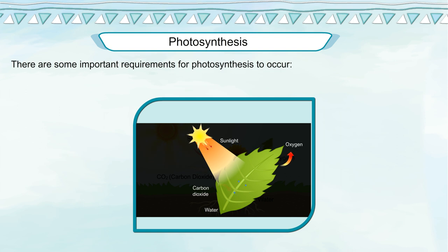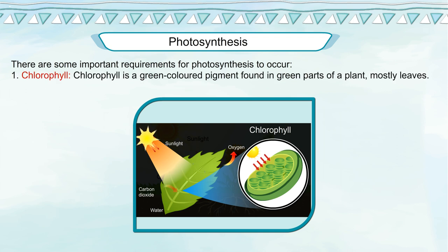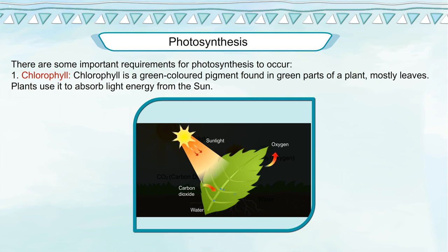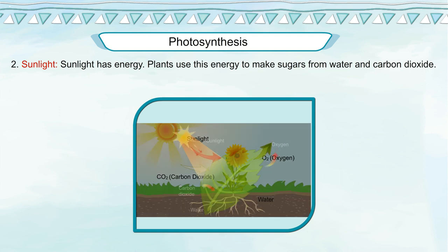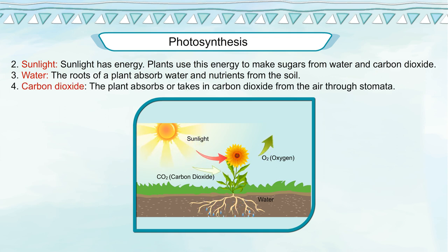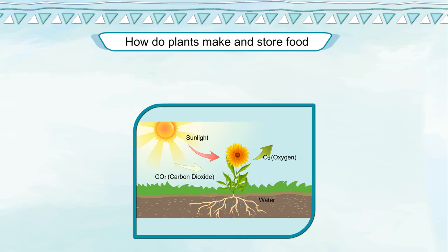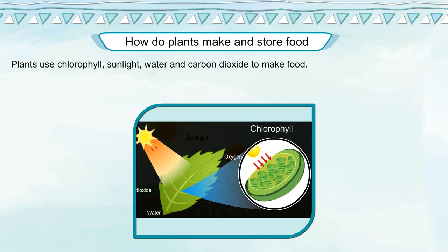There are some important requirements for photosynthesis. Chlorophyll is a green-colored pigment found in green parts of a plant, mostly leaves. Plants use it to absorb light energy from the sun. Plants use this energy to make sugars from water and carbon dioxide. The roots of a plant absorb water and nutrients from the soil. For carbon dioxide, the plant absorbs it from the air through stomata.